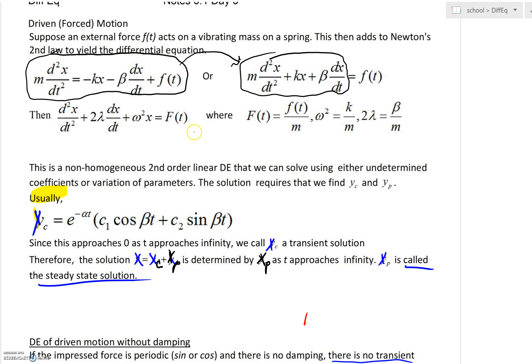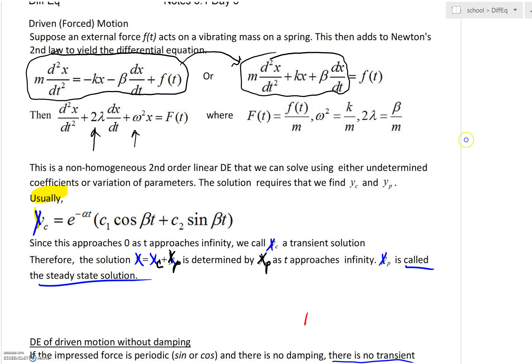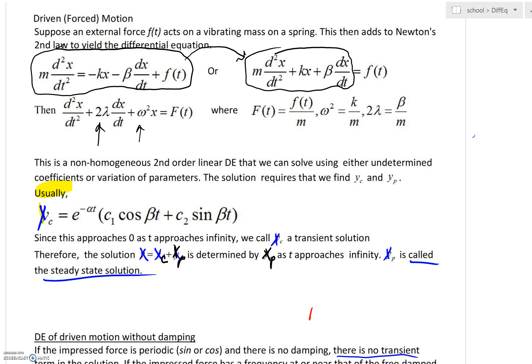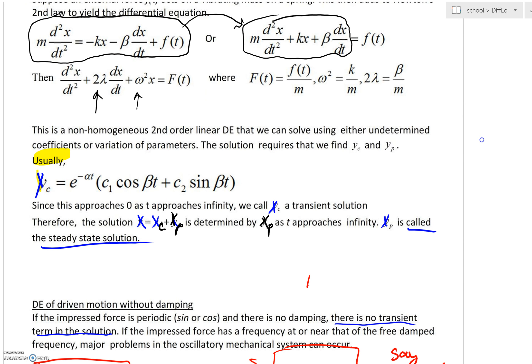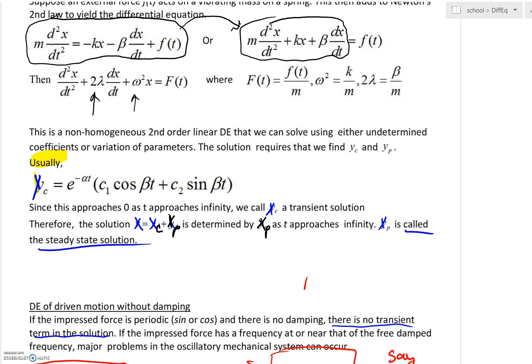When you divide by m, you have your 2λ here, your ω², and capital F(t) is little f(t) divided by m. ω² was k/m, 2λ was β/m.